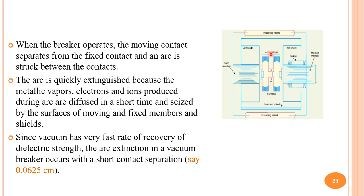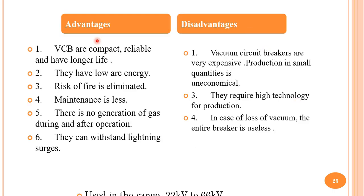Since vacuum has a very fast rate of recovery of dielectric strength, arc extinction in a vacuum breaker requires only short contact separation — the travel length of the moving contact is very small. The main advantages are that it is very compact, reliable, and has a longer life. It has low arc energy, risk of fire is eliminated, maintenance is less, there is no generation of gas during and after operation, and vacuum circuit breakers can withstand lightning surges.